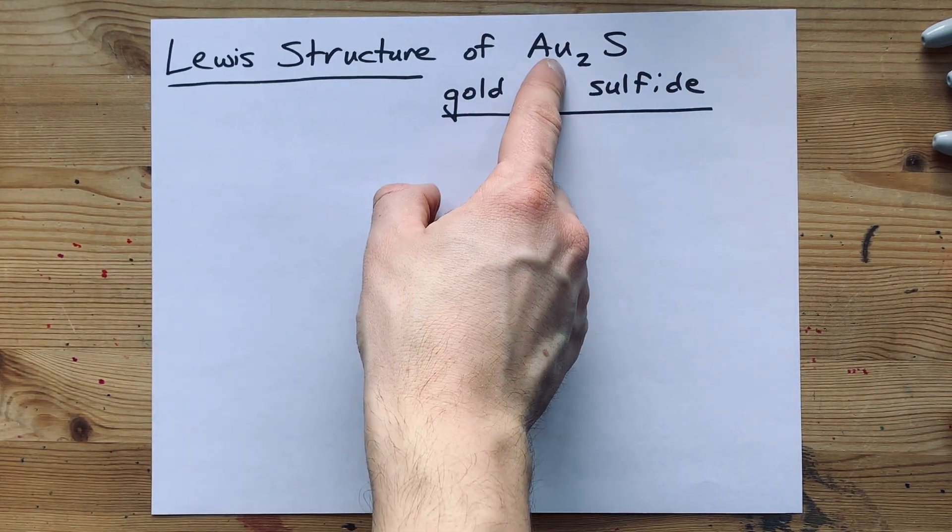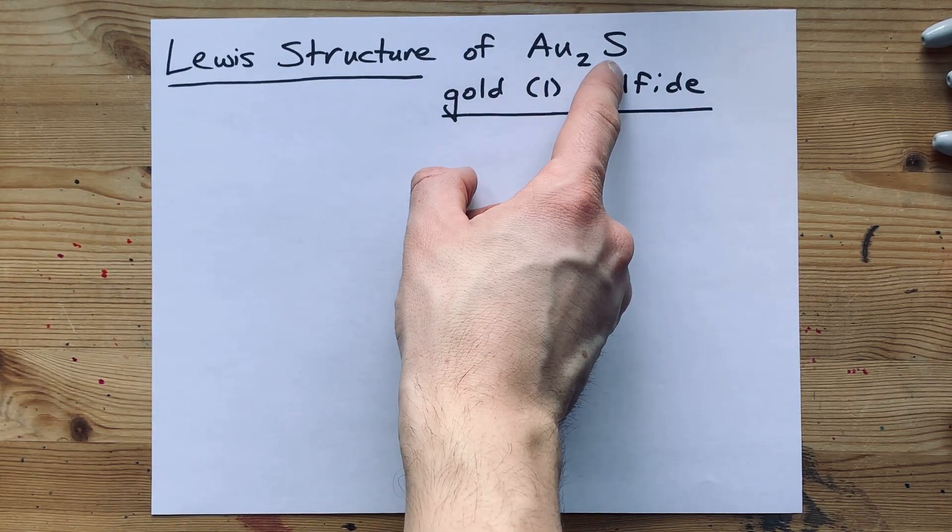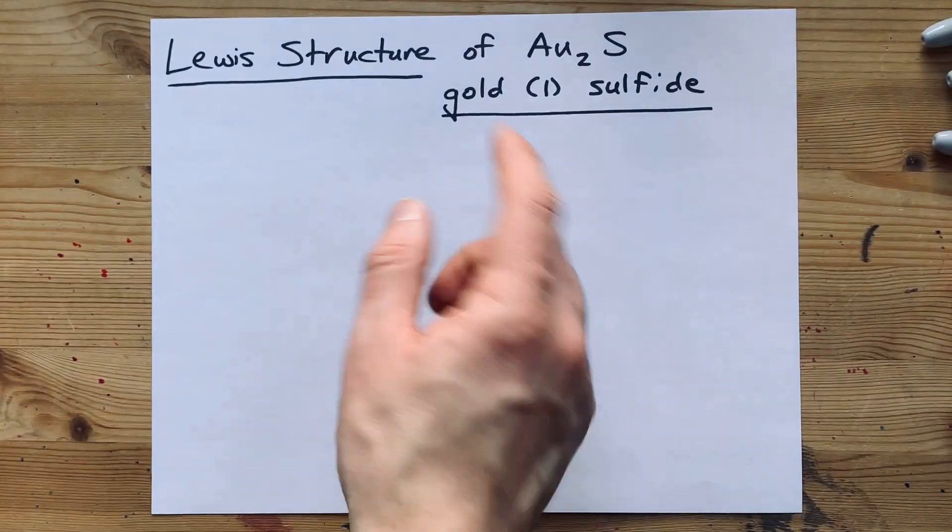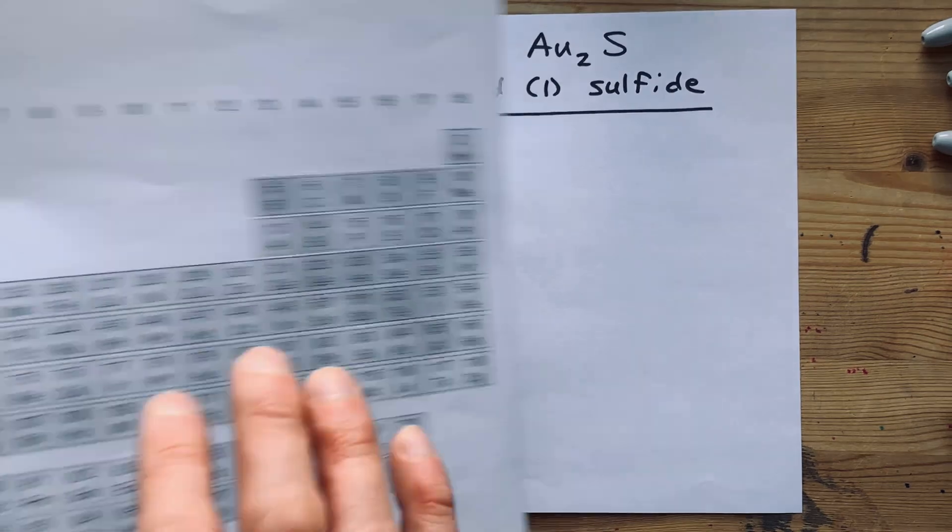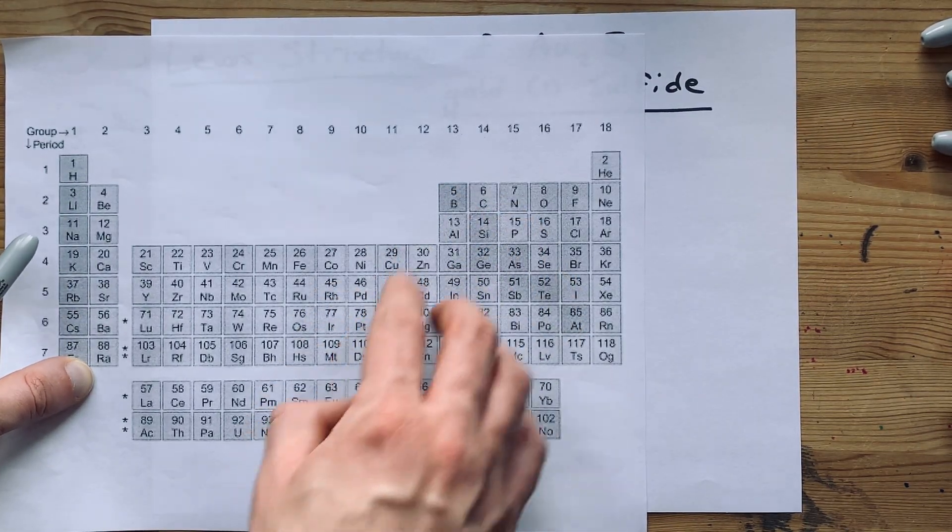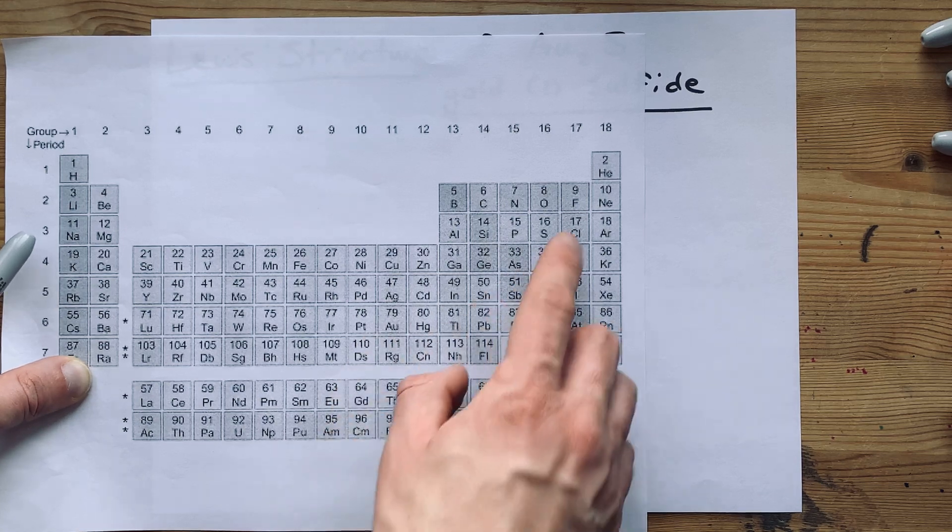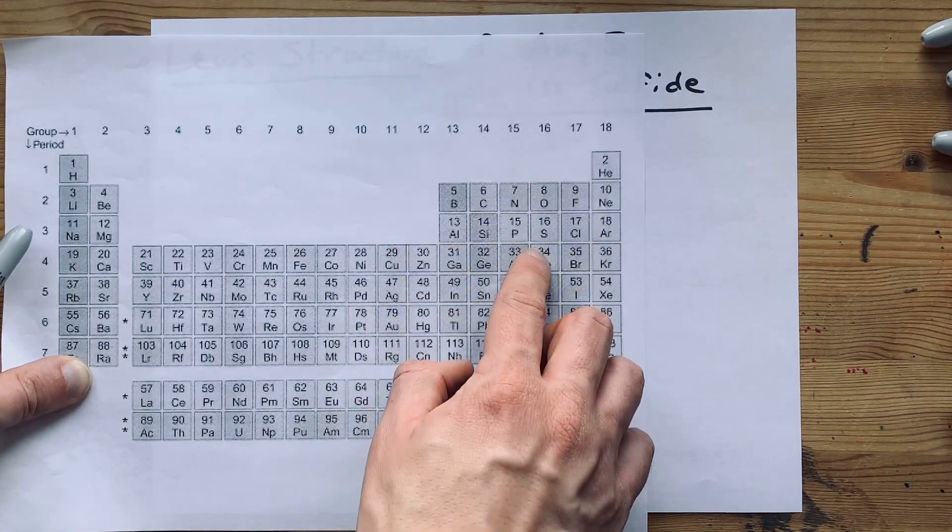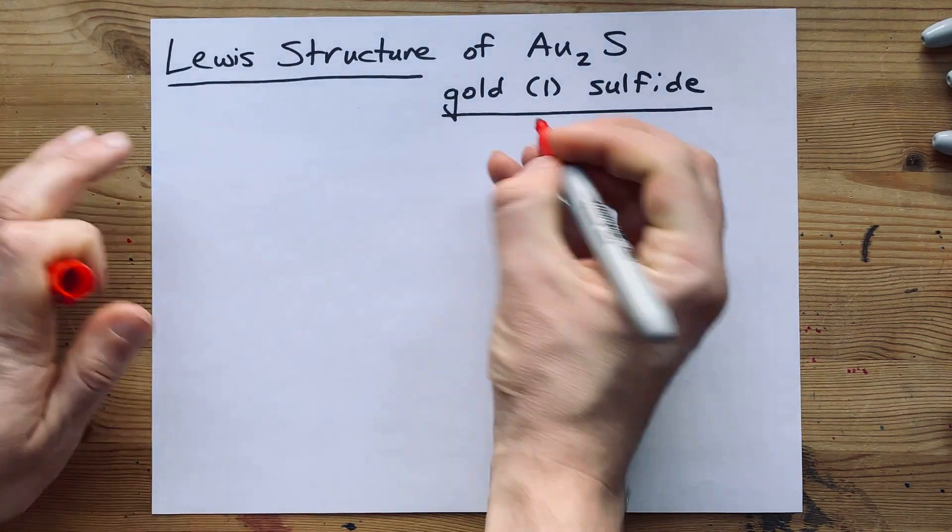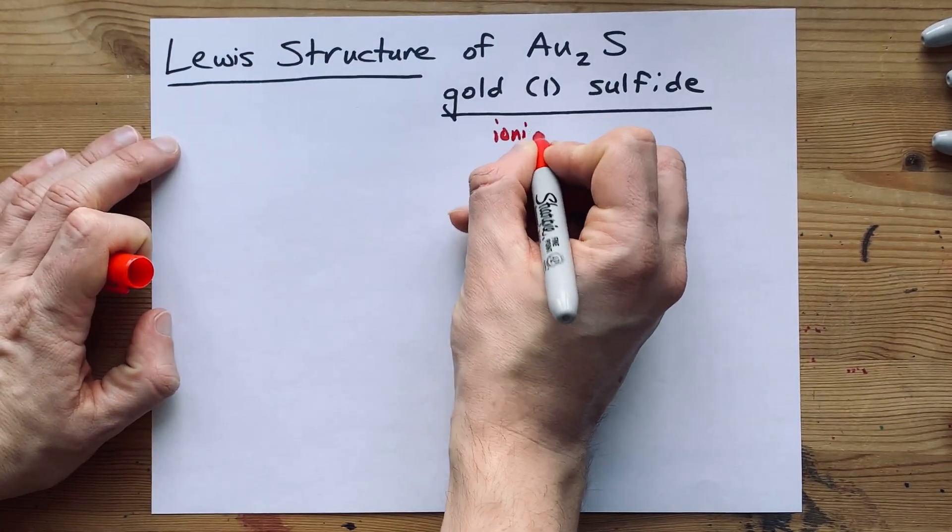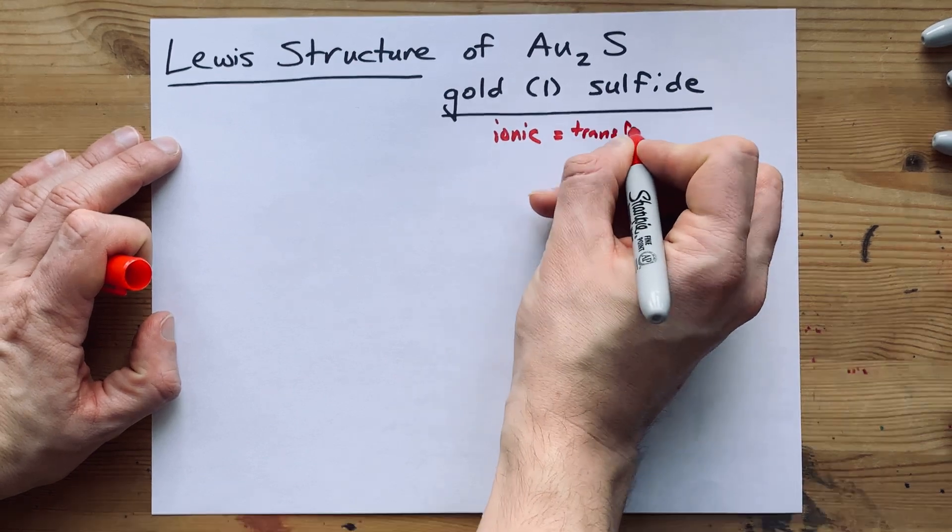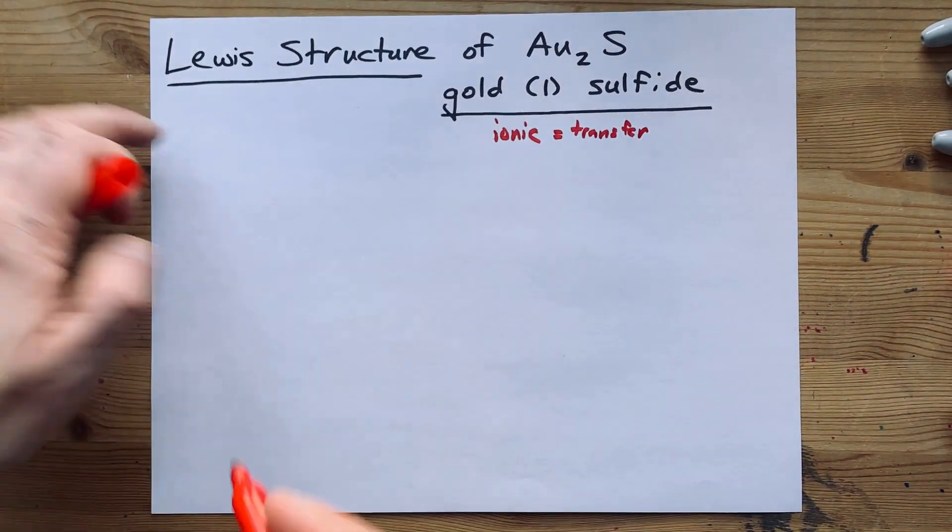The Lewis structure for gold(I) sulfide has gold, a metal, bonded to sulfur, a non-metal. I know gold's a metal because it comes from the left-hand side of the staircase. Sulfur is a non-metal, and I know that because it comes from the right-hand side of the staircase. That's important because metals and non-metals make ionic compounds together, and those form by a transfer of electrons.